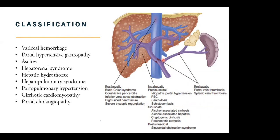In terms of clinical manifestations of portal hypertension, patients present with variceal hemorrhages. When we do a gastroscopy, we see portal hypertensive gastropathy, and as we will discuss today, ascites, also hepato-renal syndrome and hepatic hydrothorax, hepato-pulmonary syndromes, portal-pulmonary hypertension, cirrhotic cardiomyopathy, portal cholangiopathy, and not forgetting hyperasplenism with splenomegaly.